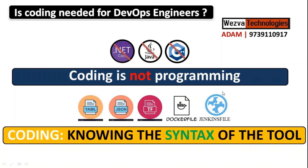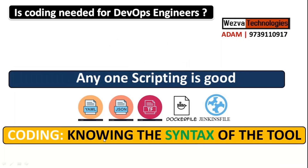Don't get confused between coding and programming. The next question is: what is scripting? Scripting is a different thing altogether — it helps you to do automation. When you are learning DevOps, for each tool there is some syntax you are going to write. You should know how to develop a Dockerfile, a Jenkinsfile, a YAML file for Ansible or Kubernetes.